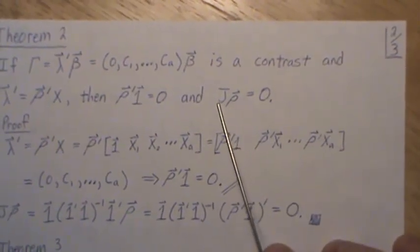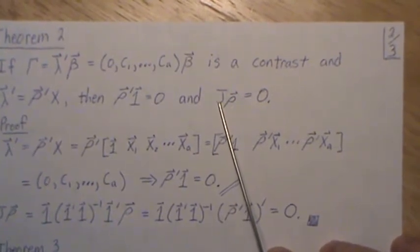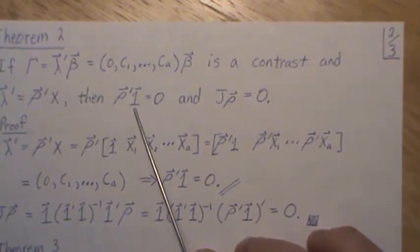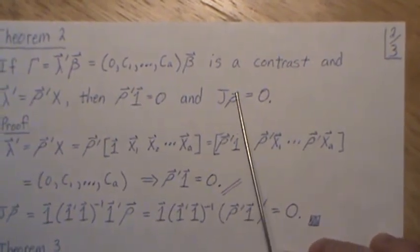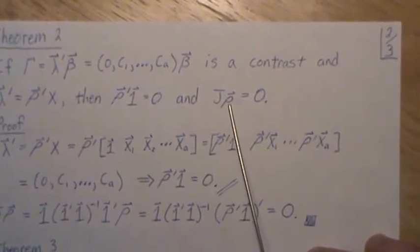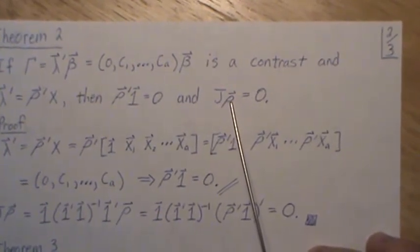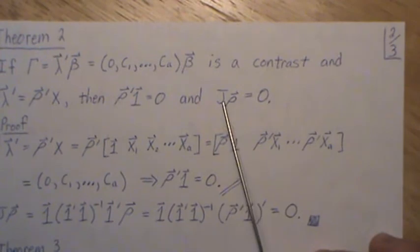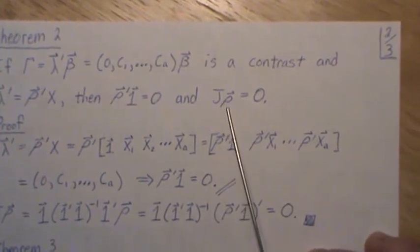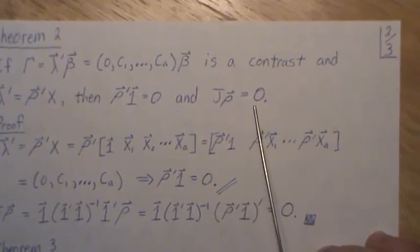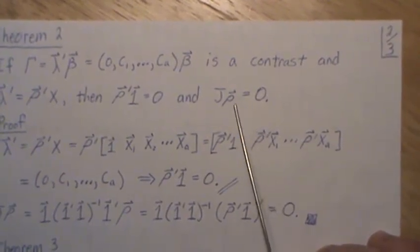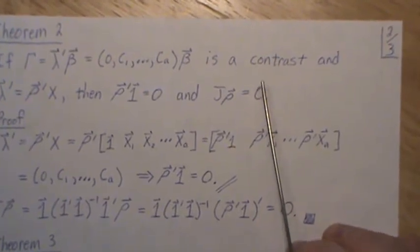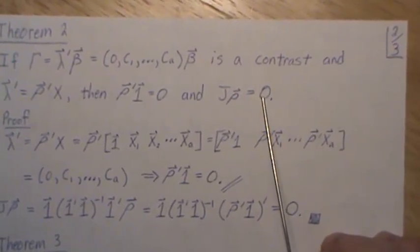An alternative proof: J is the perpendicular projection matrix onto the column space of ones, and rho is orthogonal to the one vector. J takes any vector and projects it down onto the column space of ones, making it a constant vector. But rho is already orthogonal to the one vector, so J forces it into the column space of ones. Since the zero vector lives in both that space and its orthogonal complement, J rho must equal zero.